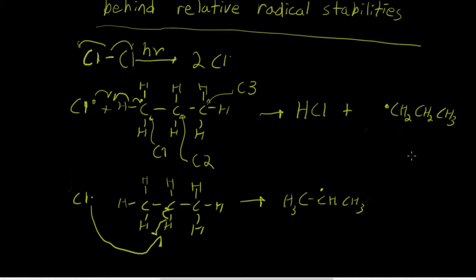Experimental observations tell us that the hydrogen abstracted from the secondary carbon is four times as likely to be abstracted than the hydrogen abstracted from C1. So the hydrogen abstracted from C2 is four times as likely to be abstracted as the hydrogen abstracted from C1.